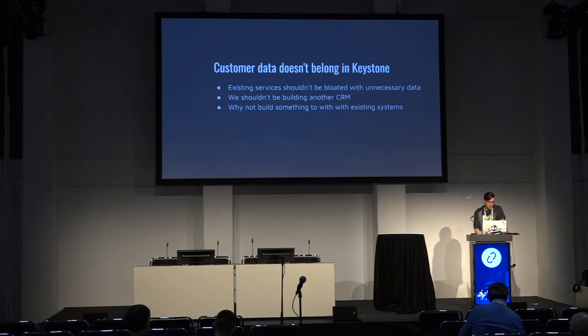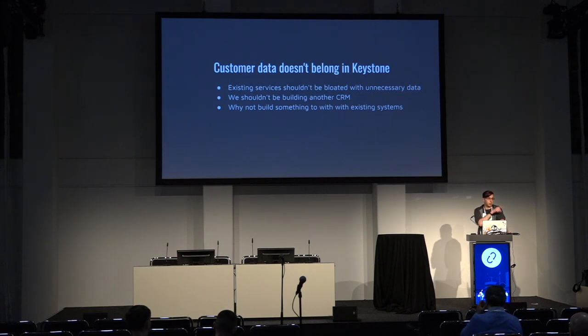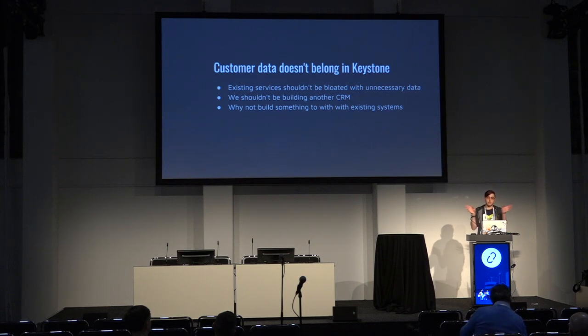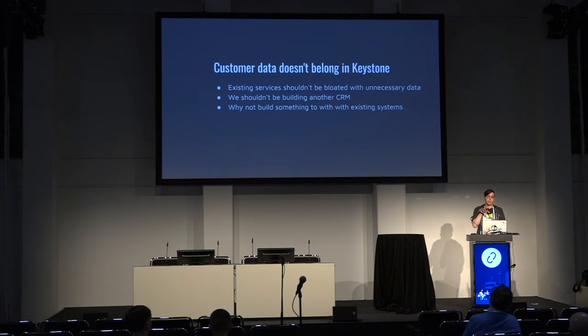For things that need to affect both Keystone and your ERP, Adjutant — that service in the middle — can affect both. It acts as a bridge between the two. You interact with it and it handles the appropriate things you need.